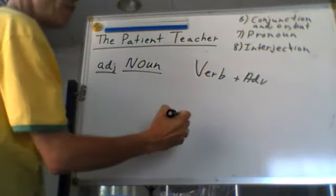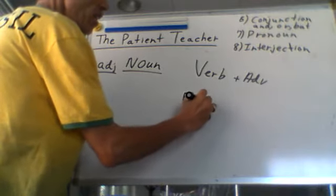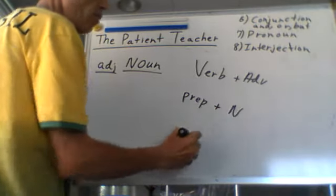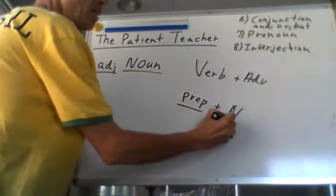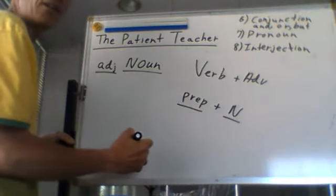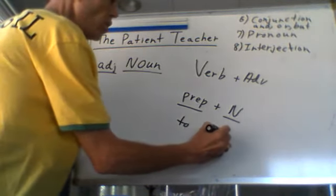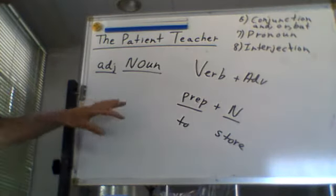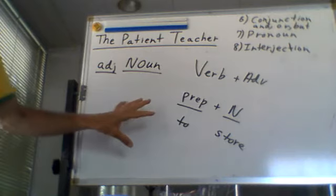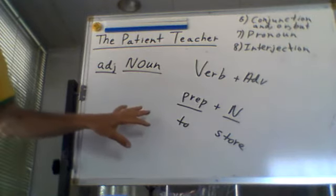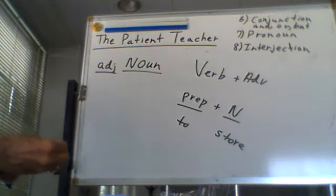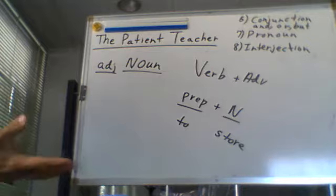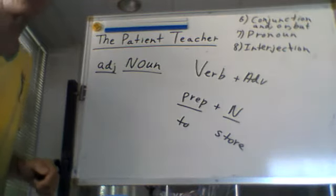And then we'll have a preposition before the noun — 'In summer,' 'To the store.' So we have patterns that we use in sentences that you'll recognize pretty quickly when you start to see them — which word goes with which word and why.